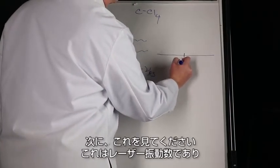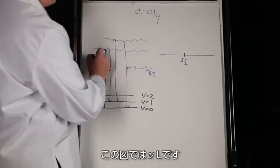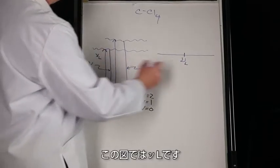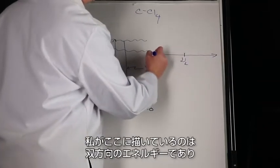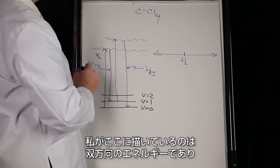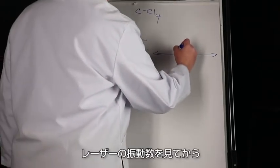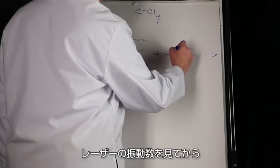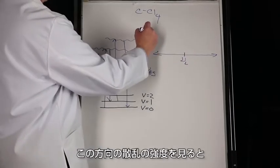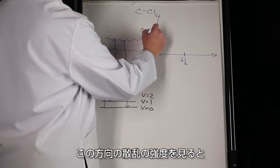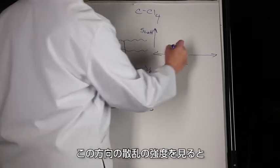Now, if we look here, this is going to be the laser frequency, nu sub L, on my plot. So what I'm plotting here is the energy going both ways, the spectrum, in a shifted format. So if we look at the laser frequency and then we look at the scatter intensity in this direction.